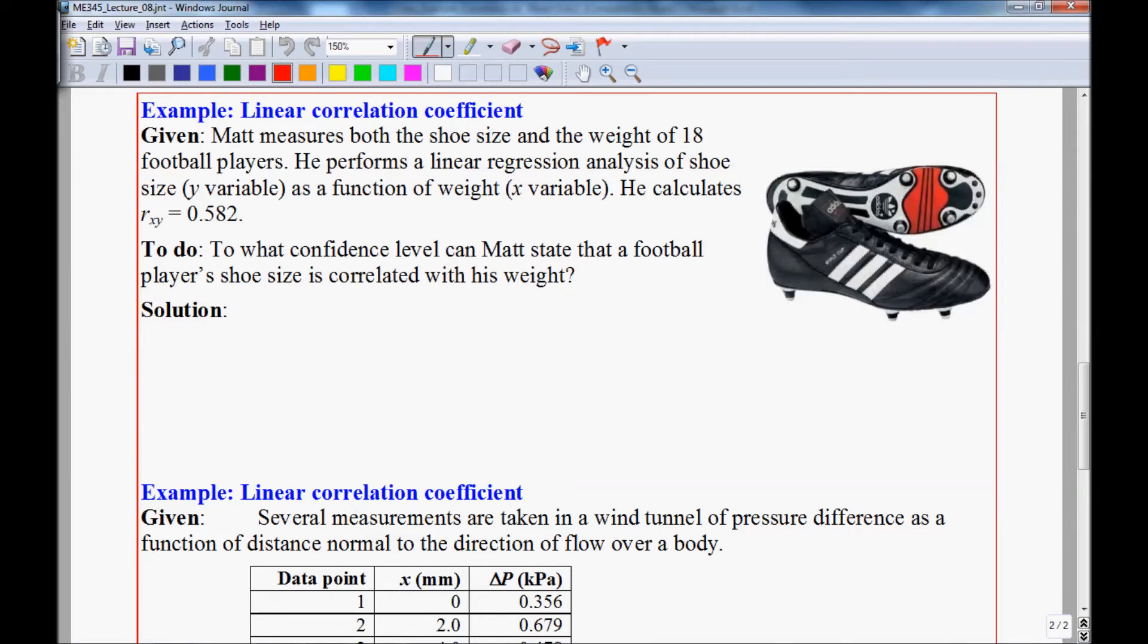Let's do an example using the linear correlation coefficient. Matt measures both the shoe size and the weight of 18 football players, performs a linear regression analysis, and he finds with these two variables, he calculates the correlation coefficient as 0.582. So the question is to what confidence level can Matt state that a football player's shoe size is correlated with his weight?